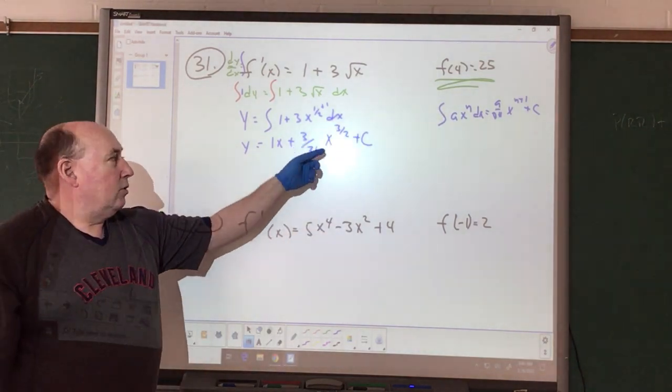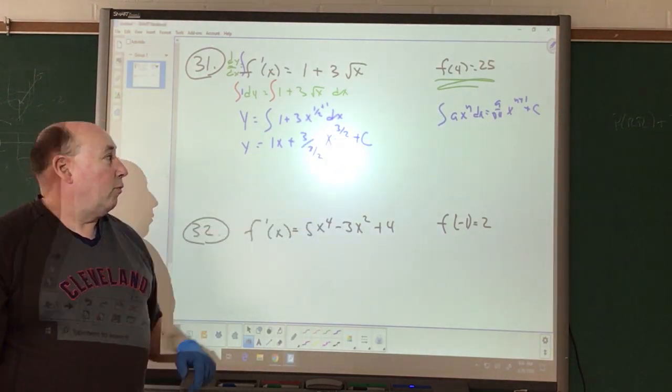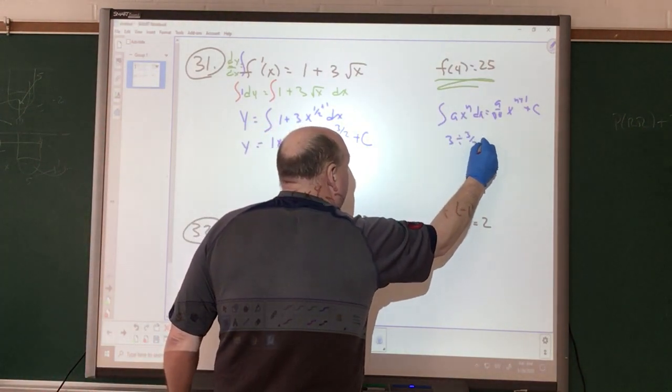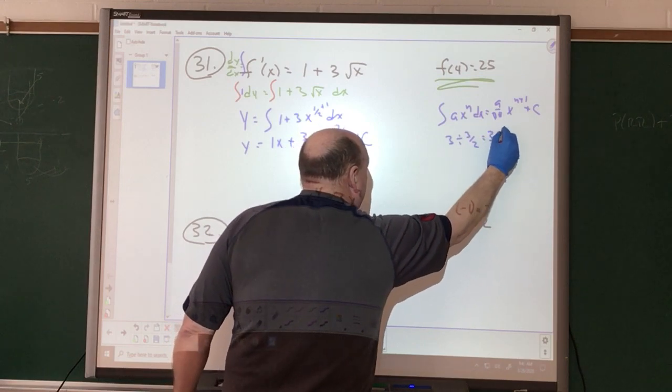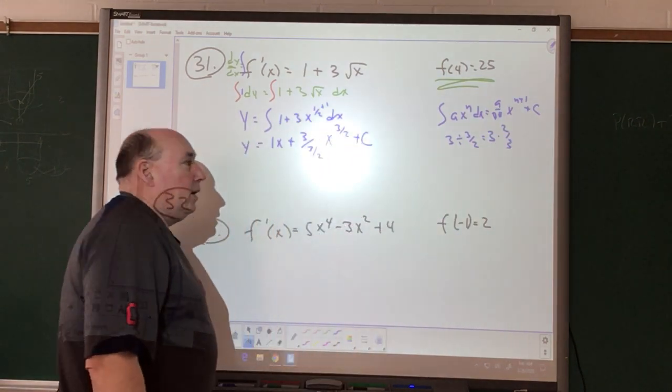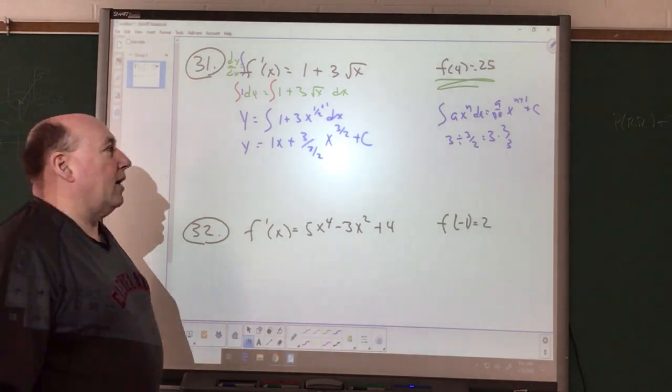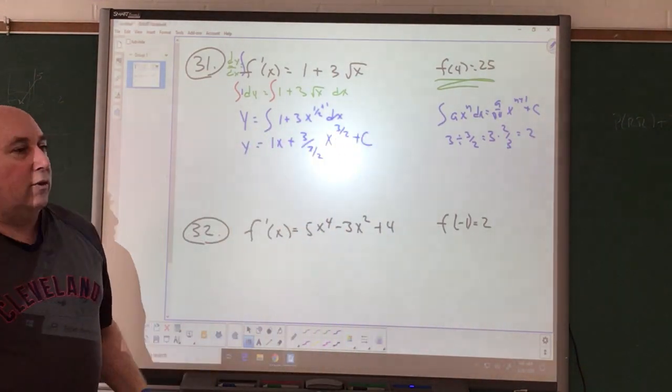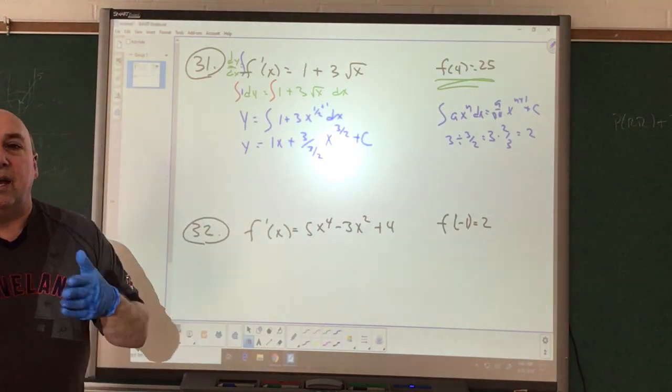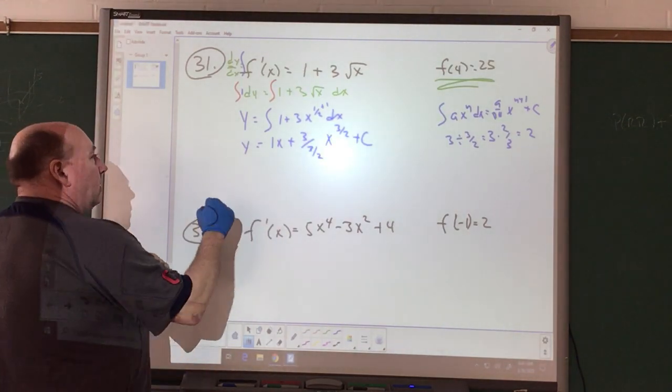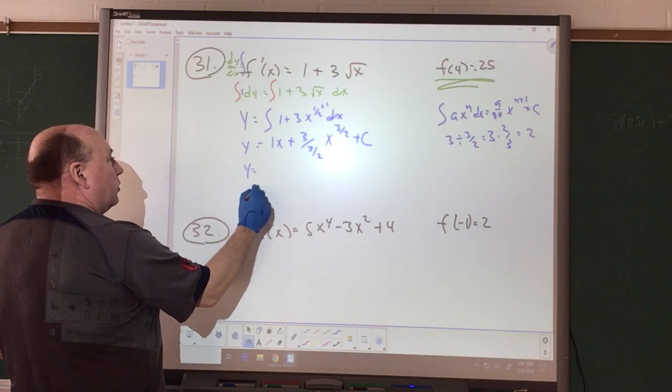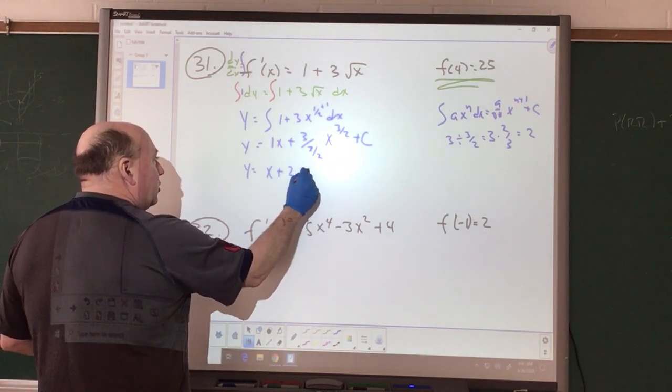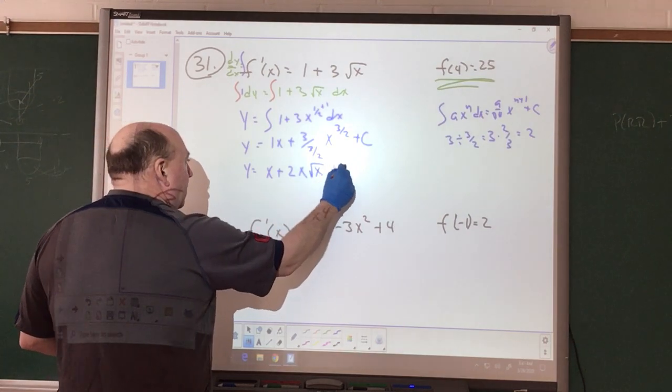Now we want to do some simplification here. We have 3 divided by 3/2, which is 3 times 2/3. The 3s go away, so we get a value of 2. X to the 3/2 power simplifies down to X square root of X. So we're left with Y equals X plus 2X square root of X plus C.